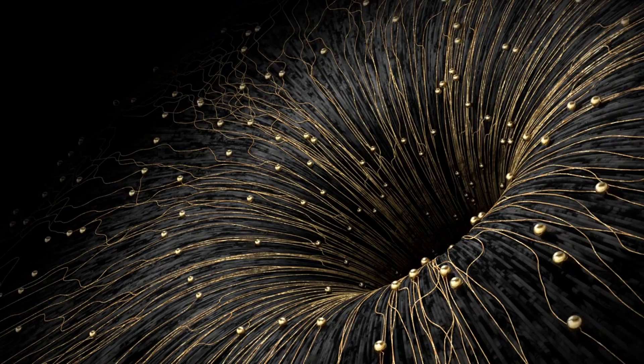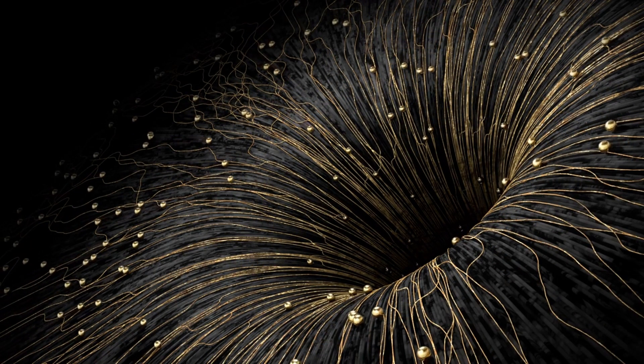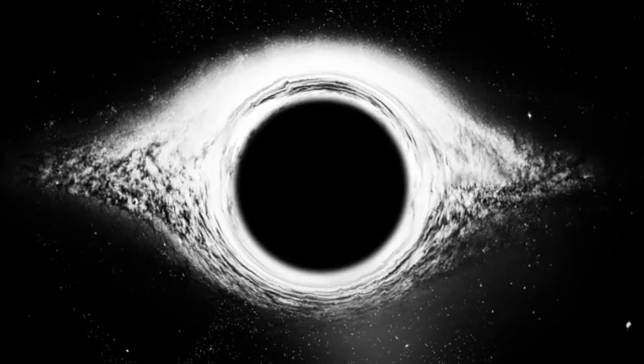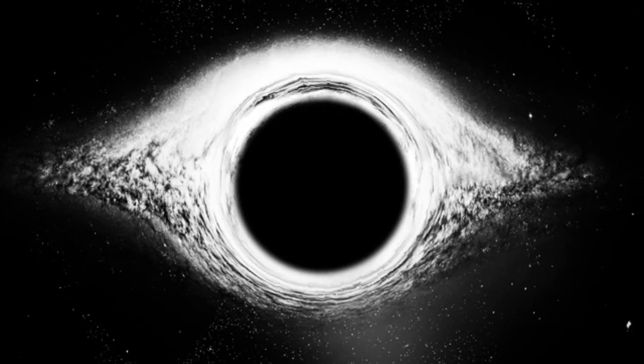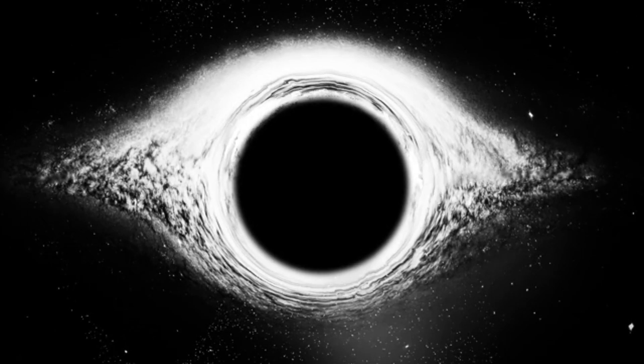As these mighty stars collapse, something strange occurs near their surfaces. Time itself starts to play tricks. From the perspective of someone far away, time appears to slow down near the event horizon, the point of no return for anything falling into a black hole. It's like the star's clock ticks at a different pace compared to ours.